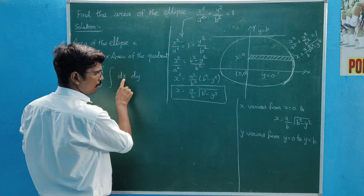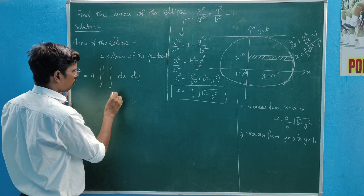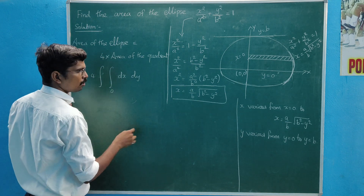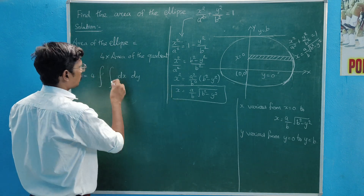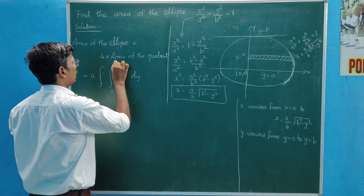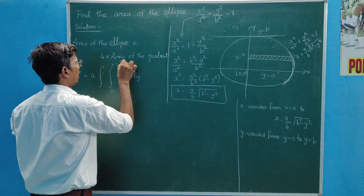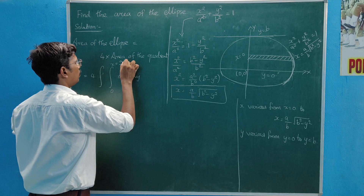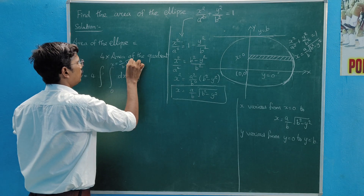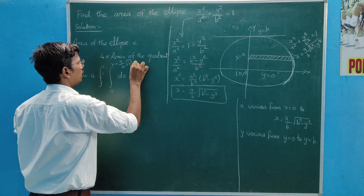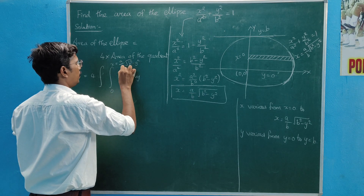x goes from 0 to (a/b)√(b² − y²), limit of the inner integral.